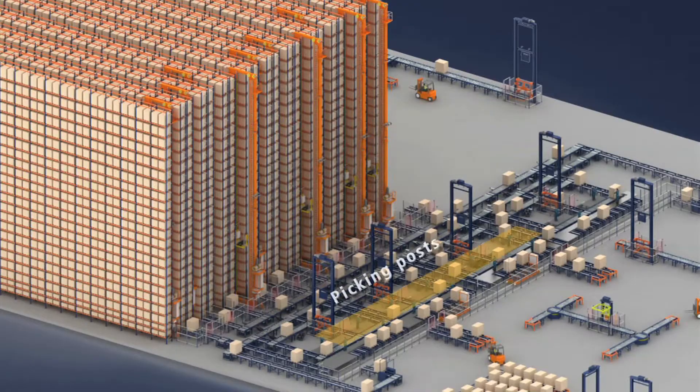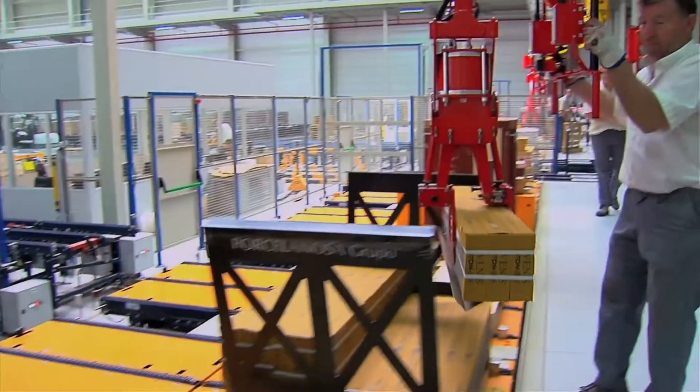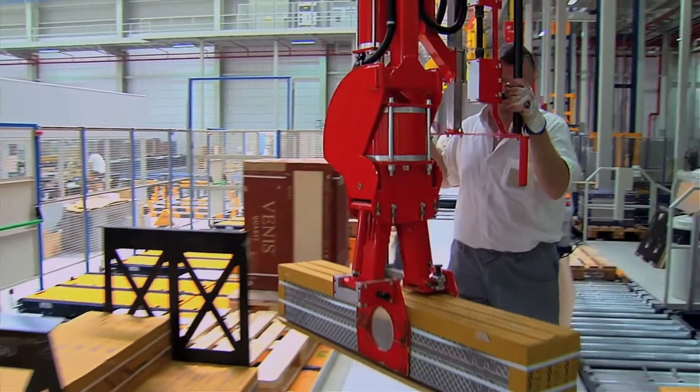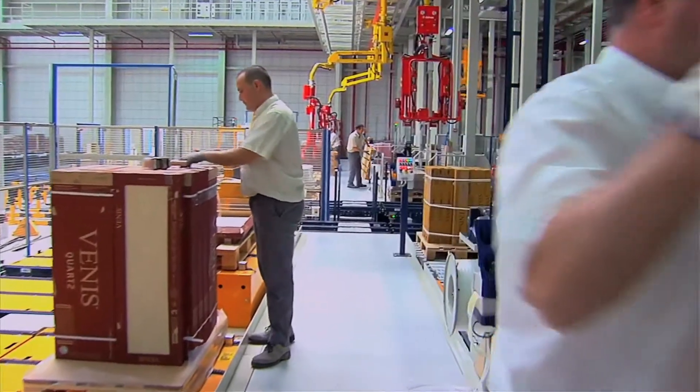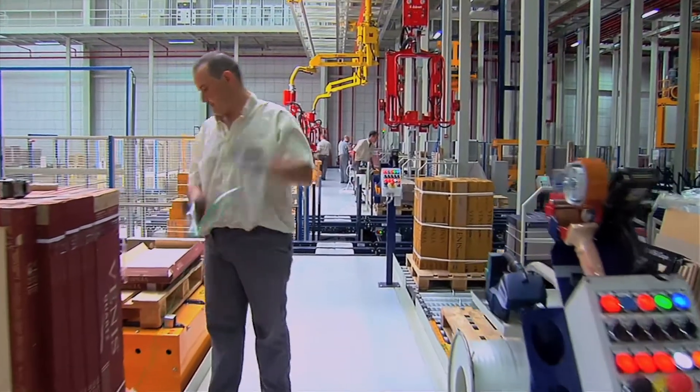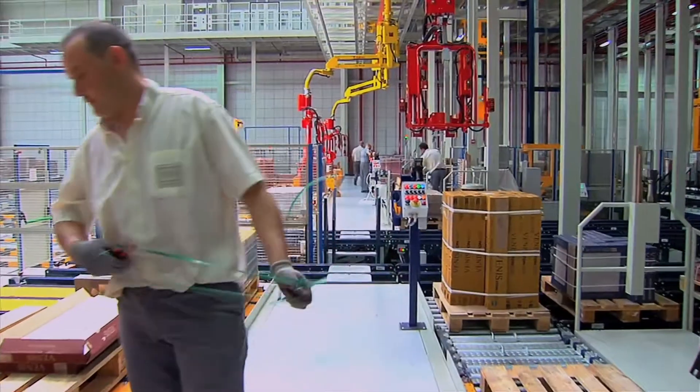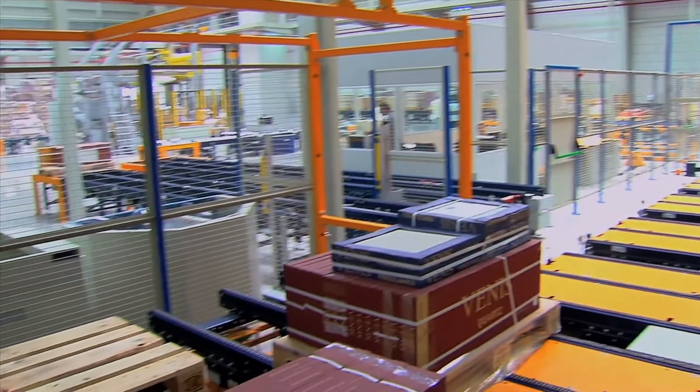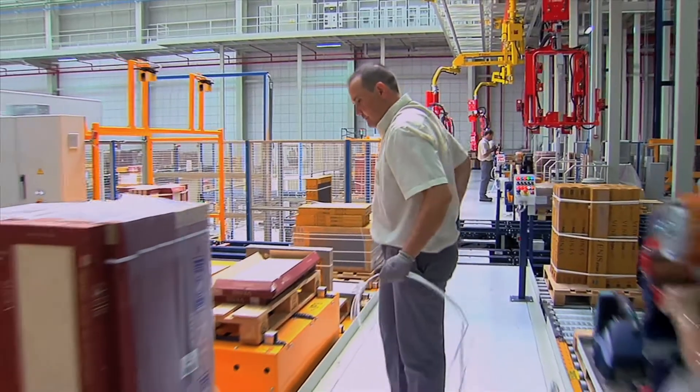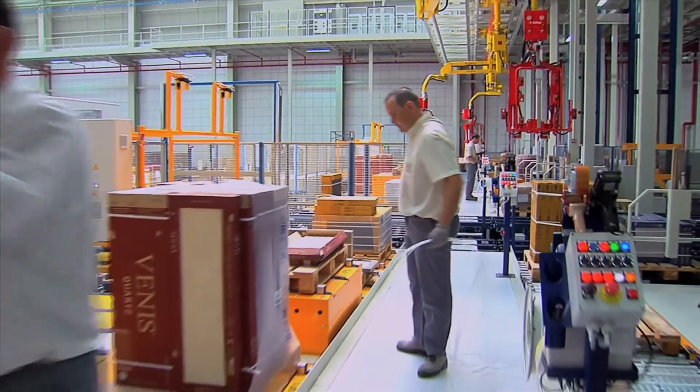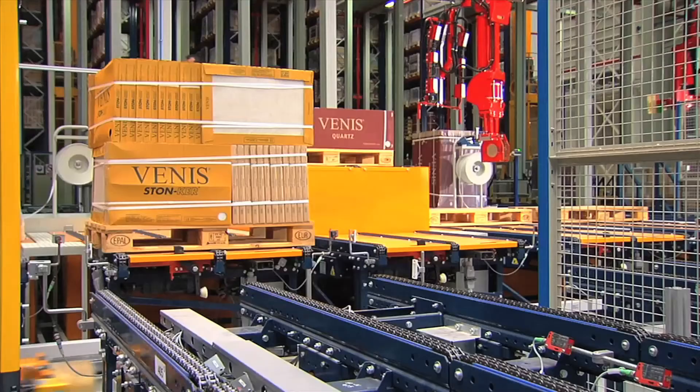Eight work posts have been set up in the picking zone, able to prepare a total of 31 orders at the same time. Pneumatic arms allow operators to handle the load effortlessly, facilitating movements and speeding up the whole process. The tables are fitted with height-adjustable hydraulic systems for greater ergonomics for workers.